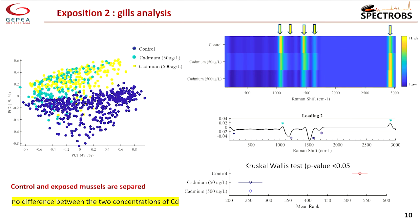For the second exposition, we did exactly the same thing. But the question is: is it possible to distinguish the two concentrations of cadmium? With PC2, you can distinguish the control from the cadmium-exposed samples — they are clearly separated — but it was impossible to distinguish the two concentrations of cadmium from each other. The loadings show that the same bands are impacted: nucleic acids, fatty acids, enzyme proteins, and lipids.